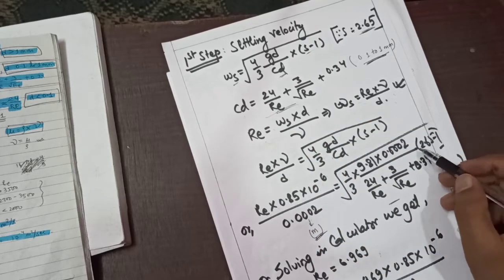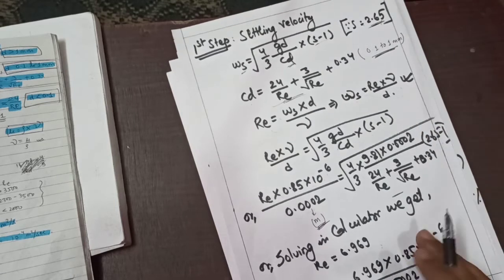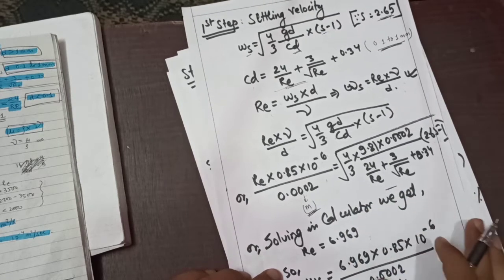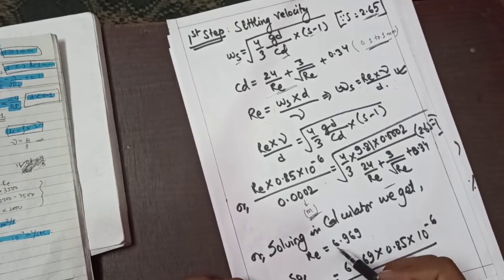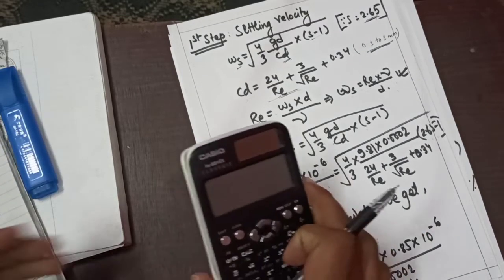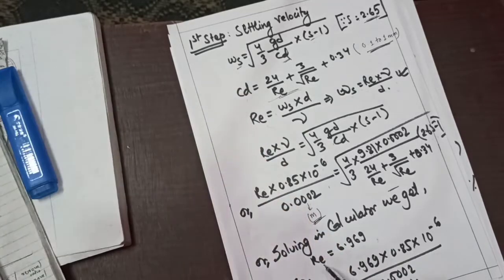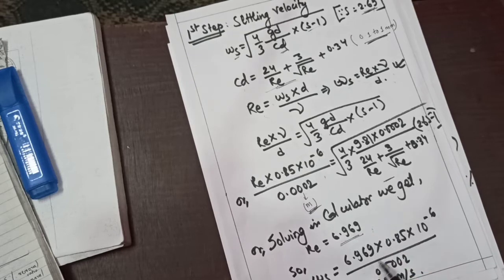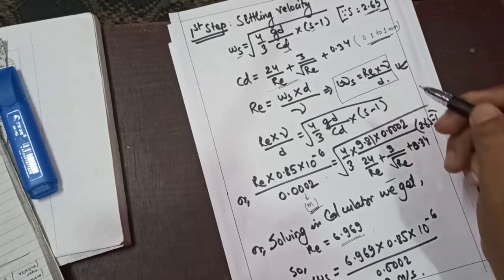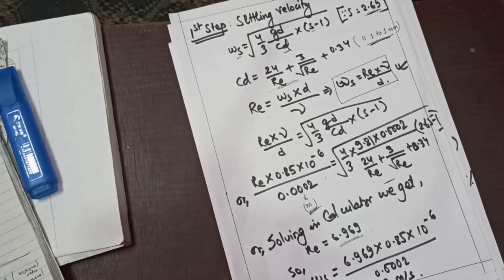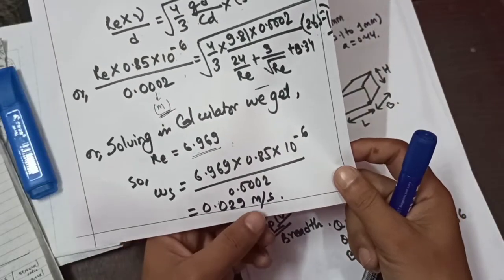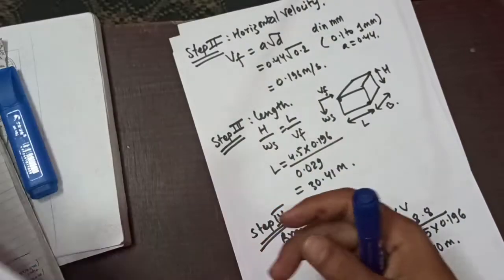Using the settling velocity formula with specific gravity s-1 = 2.65 - 1, solving in the calculator, the equation gives a result. The settling velocity Ws is equal to 0.029 meter per second.